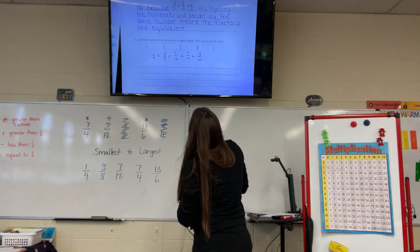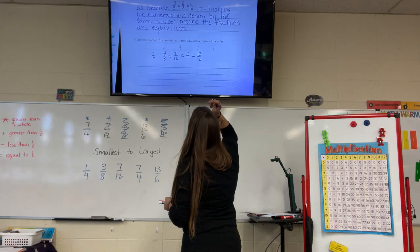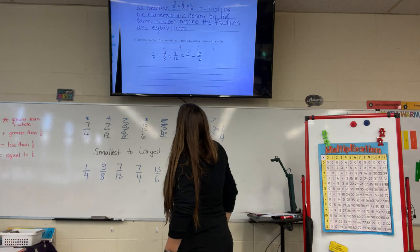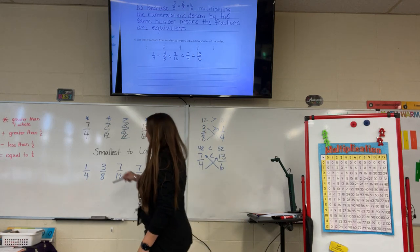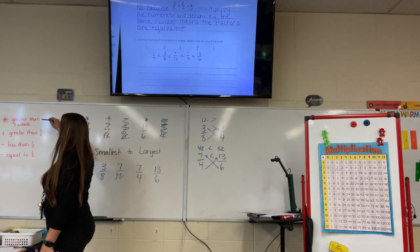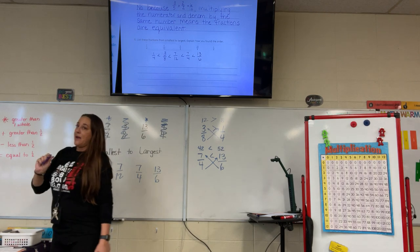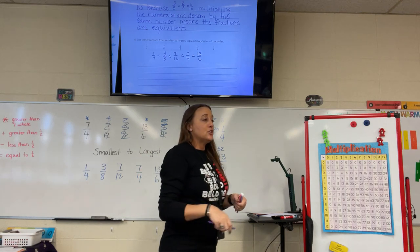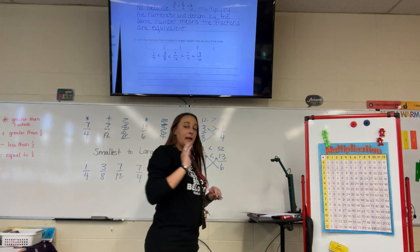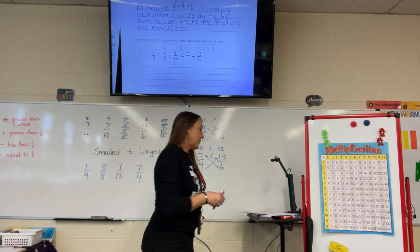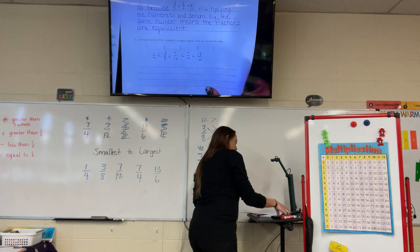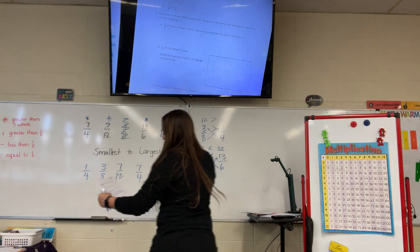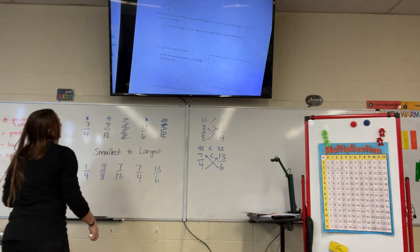The question asks us to explain how we found the order. We found the order by comparing fractions to one whole and one half, and then cross-multiplying when needed. I'm going to share the full written explanation after we're done so you can copy it down.